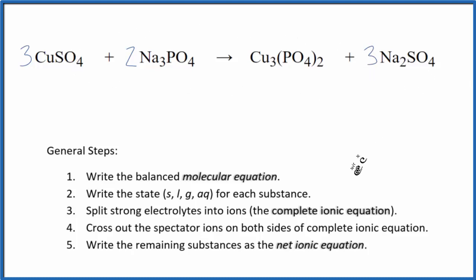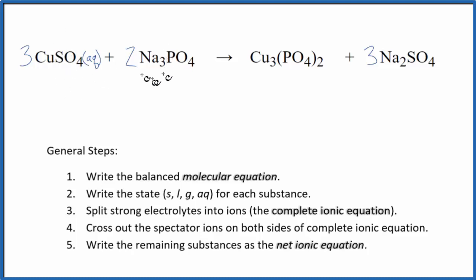If you need help balancing the molecular equation, there's a link in the description. Next we need to write the states for each substance. Copper sulfate — sulfates in general are soluble, so we write aq there; aq means aqueous, it'll dissolve in water and dissociate into its ions. Sodium compounds are also very soluble, so we write aq — aqueous. Then phosphate compounds in general, unless they have a group 1 element like sodium or potassium or the ammonium ion, these are going to be insoluble.